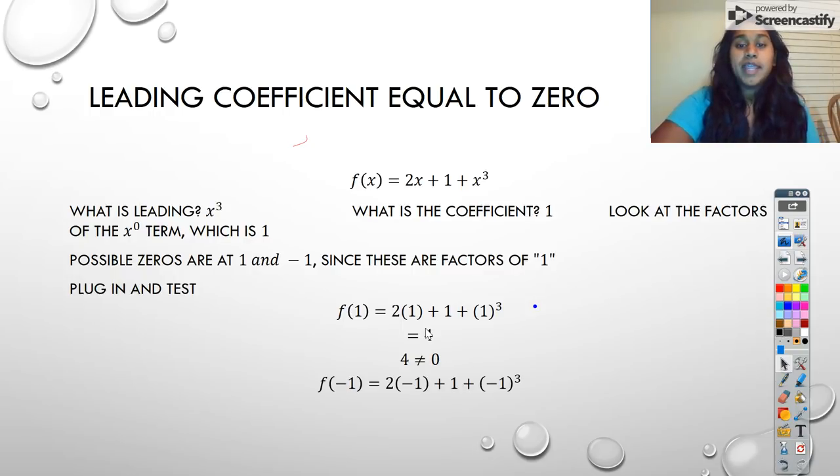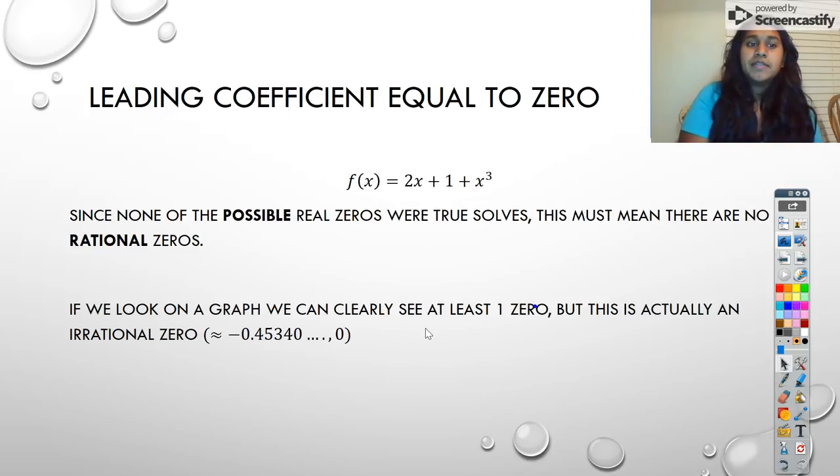So I plugged in negative 1, and we see that f(-1) is equal to negative 2, and negative 2 doesn't equal 0. So what does that tell us? This in fact tells us that for this function, 2x + 1 + x³, even though there were possible real zeros, there are no actual rational zeros.